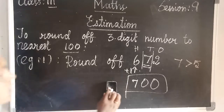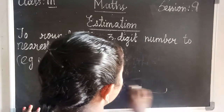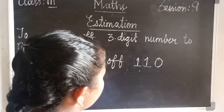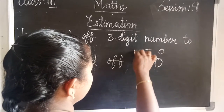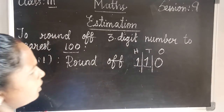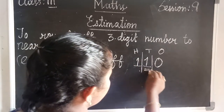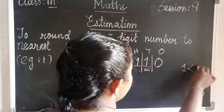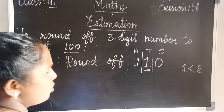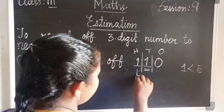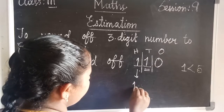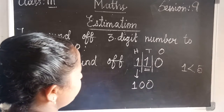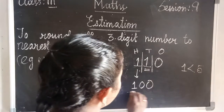Let's see another example: 110. Write the place value and then look at the tens place value. 1 is less than 5, so you directly keep the hundreds place value as 1, and then tens and ones place values are 0. So the answer is 100.